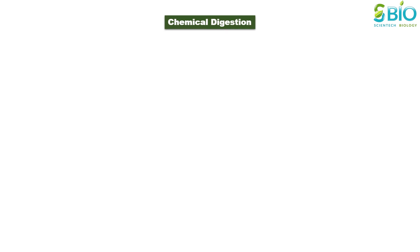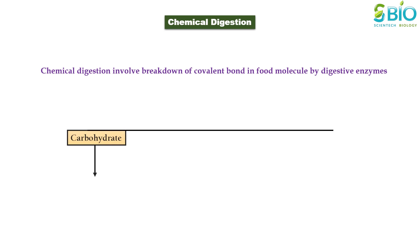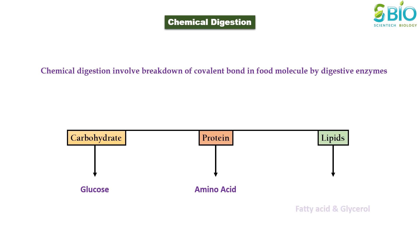Chemical digestion involves the breaking of covalent chemical bonds in organic molecules by digestive enzymes. Carbohydrates are broken down into glucose, proteins are broken down into amino acids, and fats are broken down into fatty acids and glycerol.